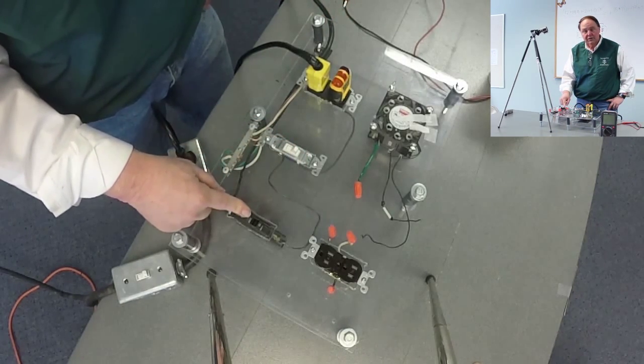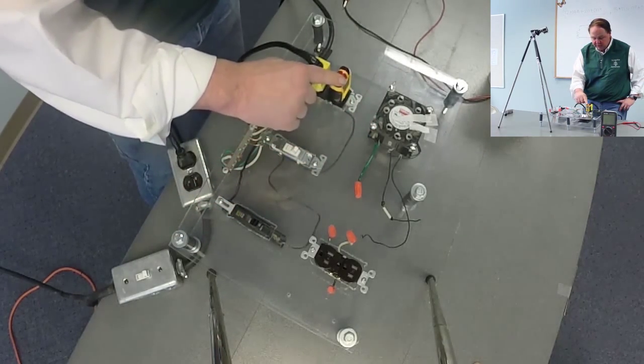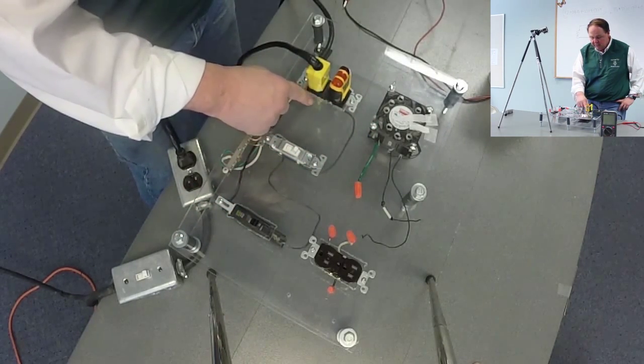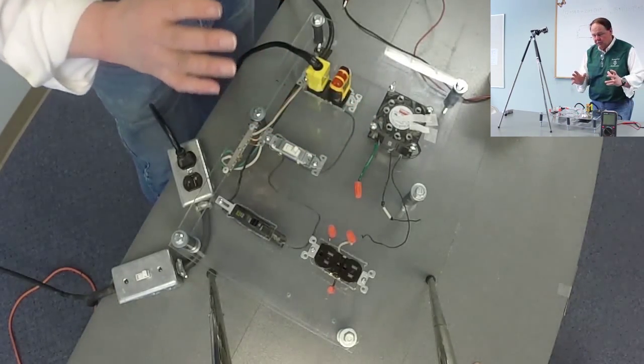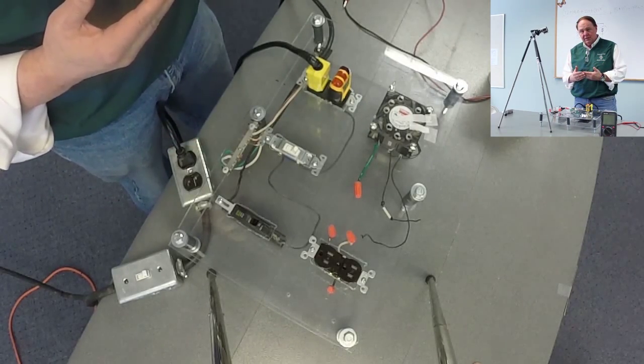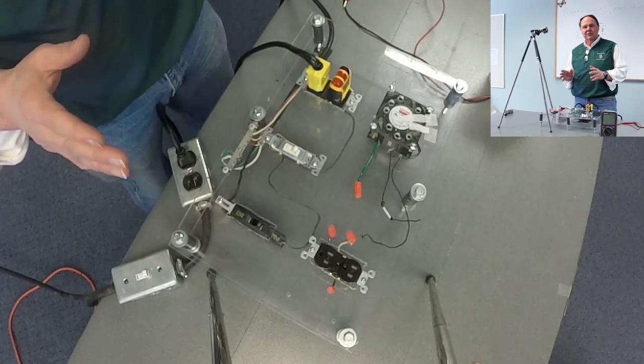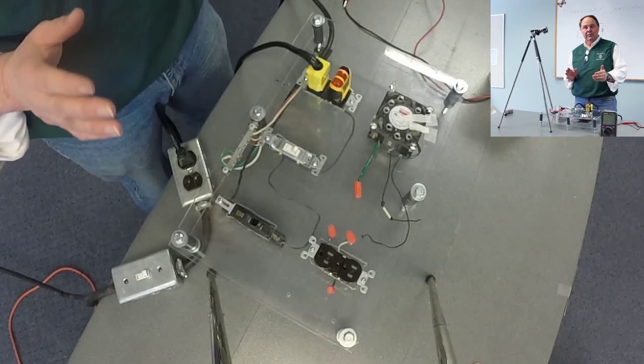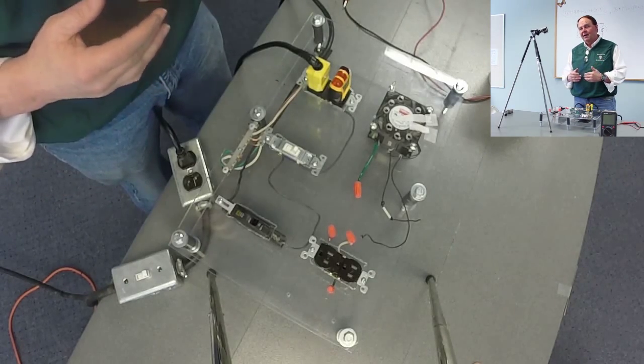From the circuit breaker we're going to this receptacle, and from the receptacle we're going to go to this fan. We'll show you how that works in a few minutes. Keep in mind, the equipment ground must be isolated on the secondary side of the overcurrent protection. That's very important.